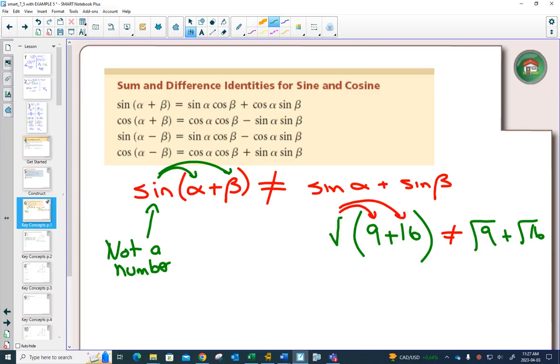You can't distribute a function. So if you have sine or cos of two angles added or subtracted, the only thing you will be able to do is use these formulas. And what we want to get good at is recognizing when we have these formulas, either the right side or the left side. If we have the right side, you can switch it to the left side. If you have the left side, you can switch it to the right side. But these are the only things you can switch it to. You can never distribute a function.